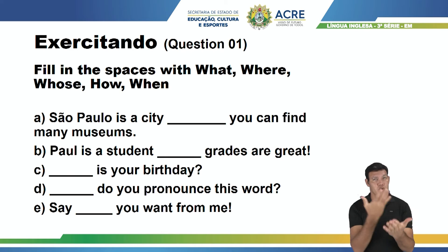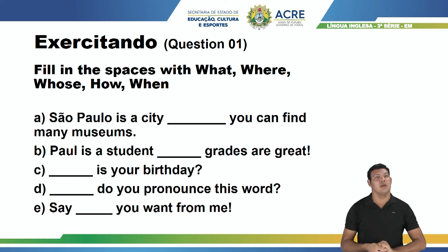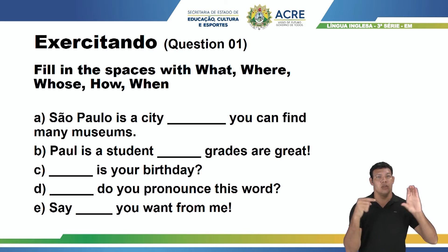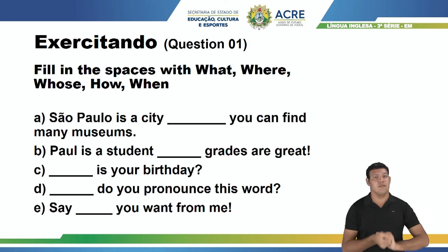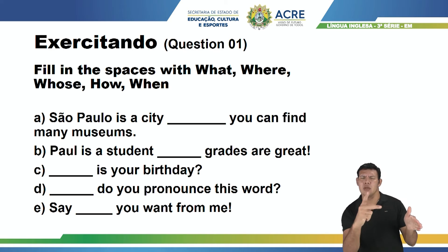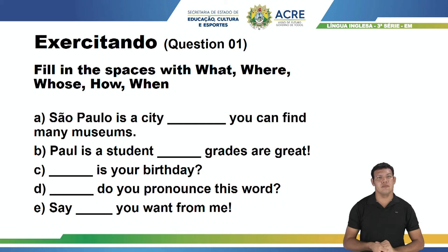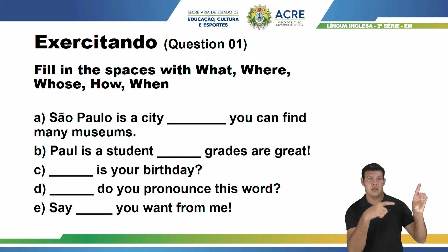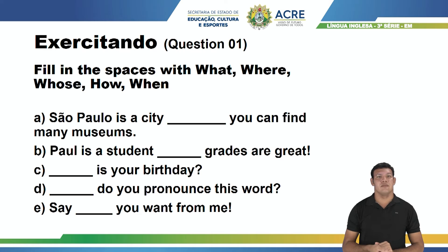Letter C: só pode ser o when, porque estou perguntando quando. When is your birthday? Quando é o seu aniversário? Letter D: do you pronounce this word? Estou perguntando como. Então na letra D só pode ser o how. How do you pronounce this word? Como pronuncia esta palavra?